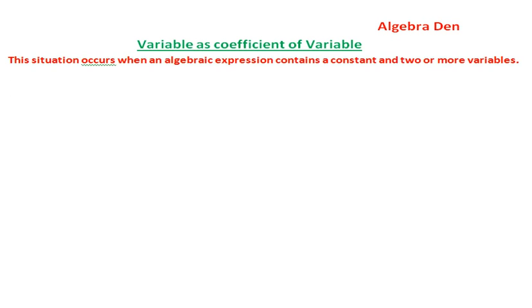Variable as coefficient of variable. This situation occurs when an algebraic expression contains a constant and two or more variables.